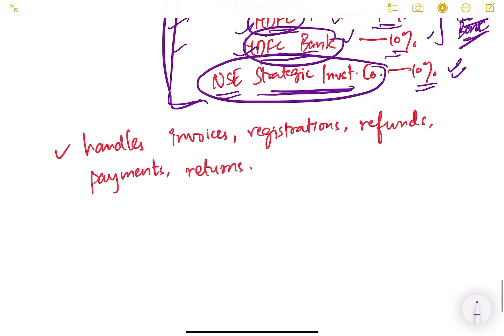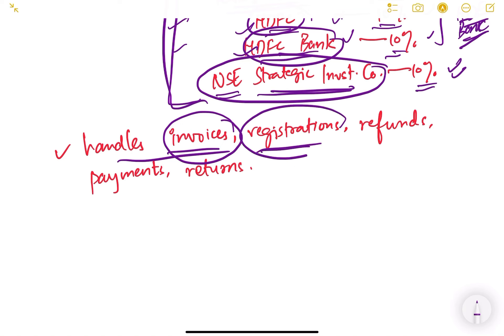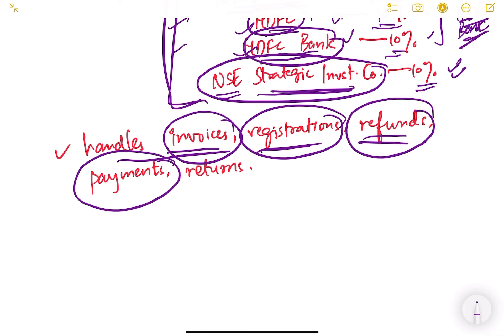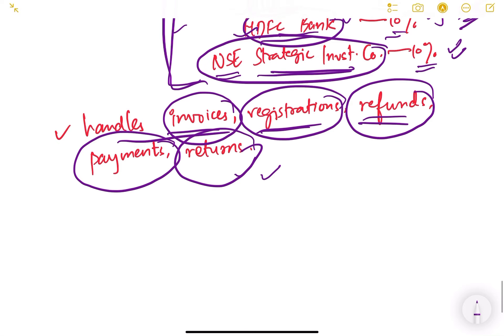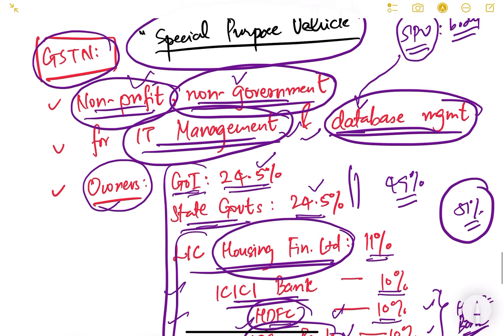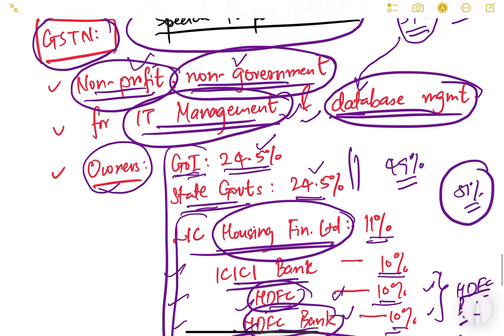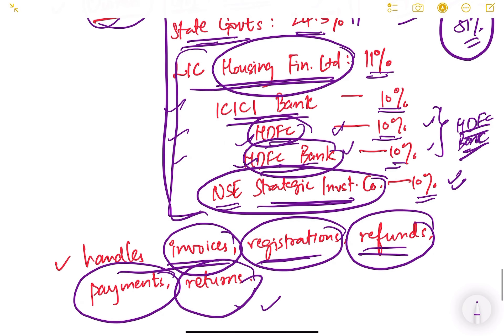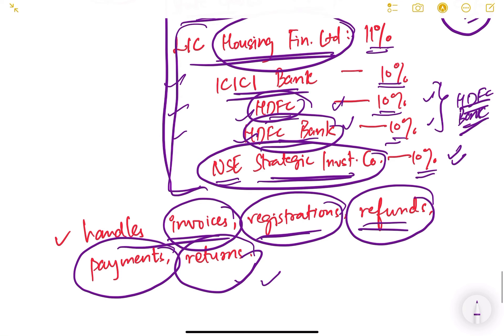GSTN handles the invoices uploaded by businesses, registration for GST, refunds based on invoices, tax return payments — all managed by the GSTN. In this video we studied the different benefits and challenges of GST and about the GST Network. In the next video we will continue with GST and see what different items are placed into which slab rates and what the different rates of GST are in India, concluding the GST topic.